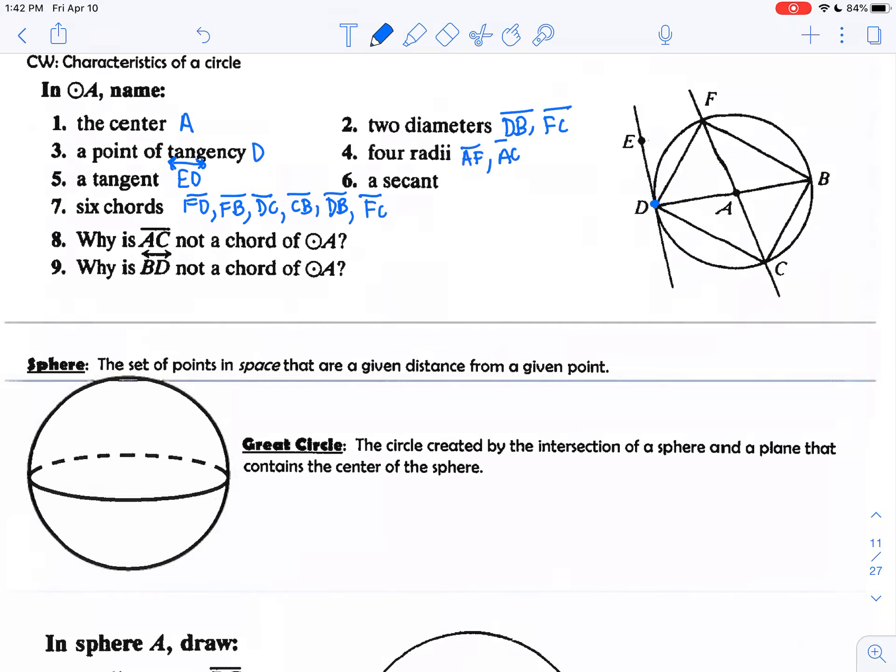The four radii would have been AF, AC, AB, and AD. A secant line is a line that passes through a chord. I see this area here and this area here, it goes past the chord. So we're going to say line FC is a secant line.